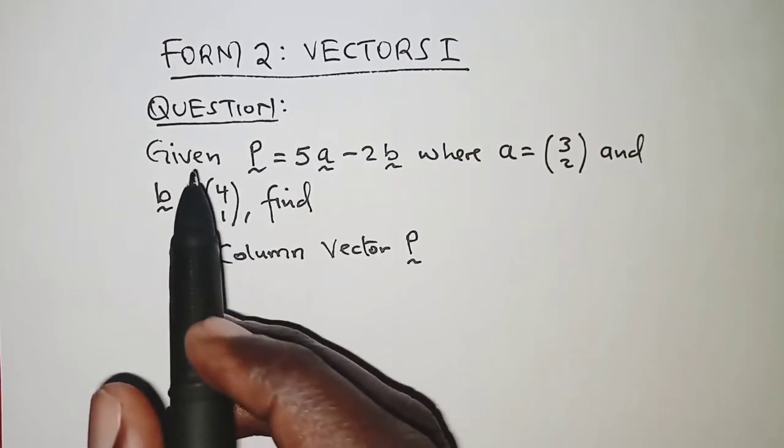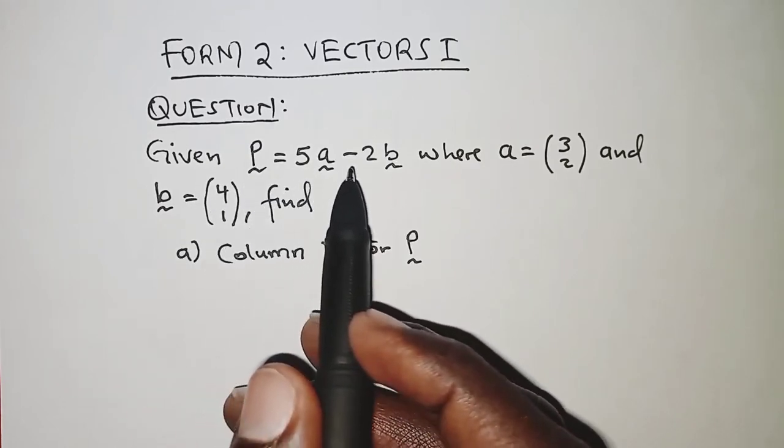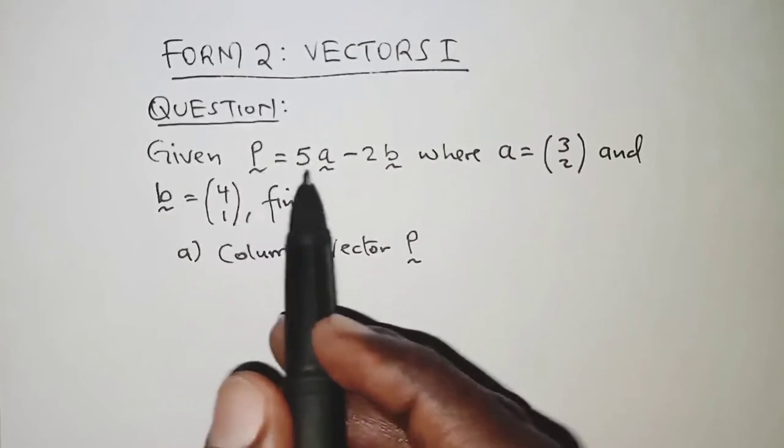The question we have here reads: given P is 5A minus 2B, where P, A and B are vectors.